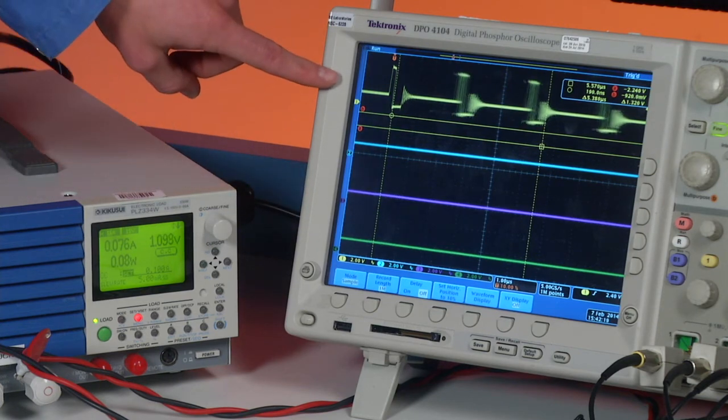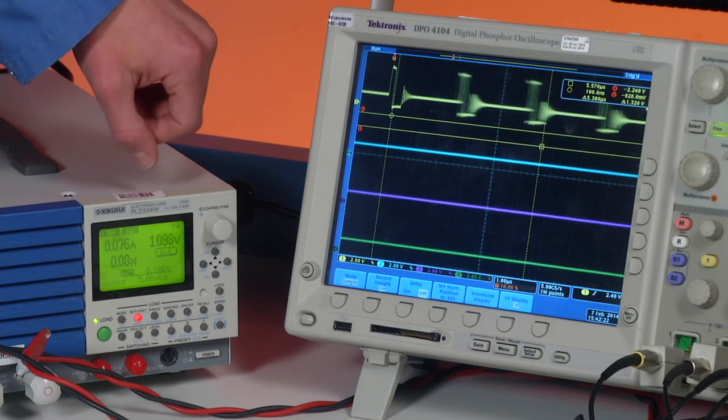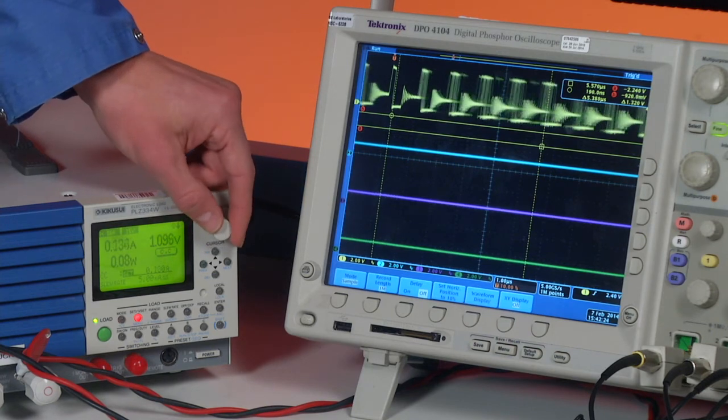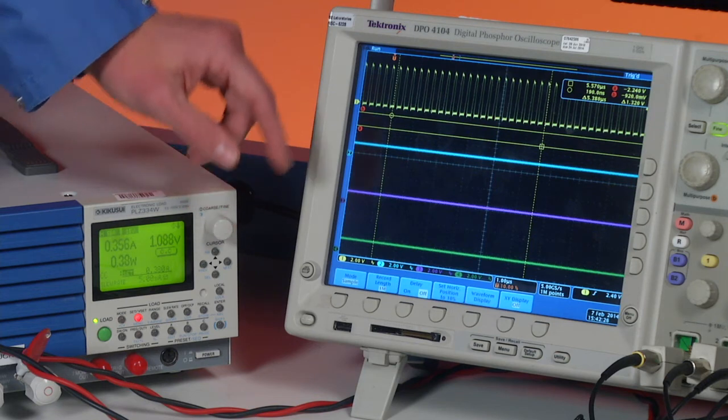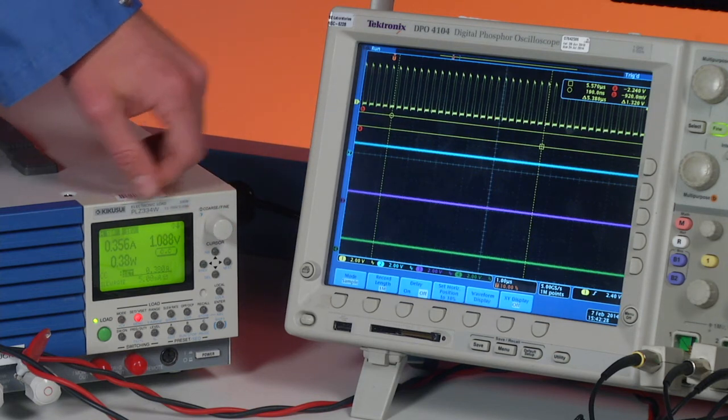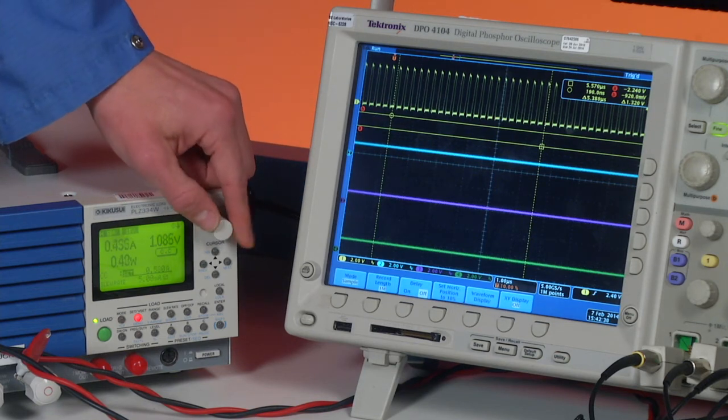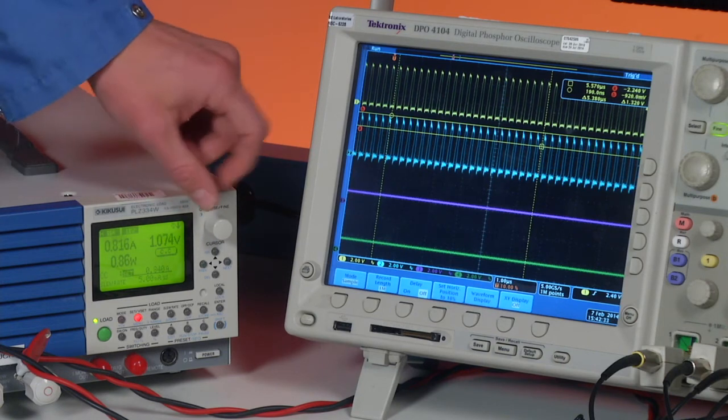The first phase is currently operating in a PFM mode at low current. But as I increase the current, it transitions into PWM mode. I can continue increasing the current until an additional phase is added.